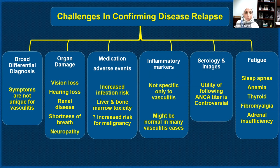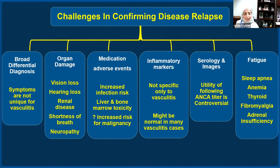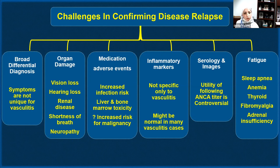Regarding serology, the most common question is about ANCA testing and ANCA titers in ANCA-associated vasculitis. The utility of following ANCA antibodies is controversial, and the correlation between the titer and disease activity is also controversial — it is one piece of the puzzle, but we cannot rely on it 100%. Lastly, fatigue is very common in patients with autoimmune diseases and vasculitis. Many other conditions can cause fatigue — anemia, thyroid disease, sleep apnea. If your doctor says your vasculitis is in remission but you are still fatigued, we should look for another reason.